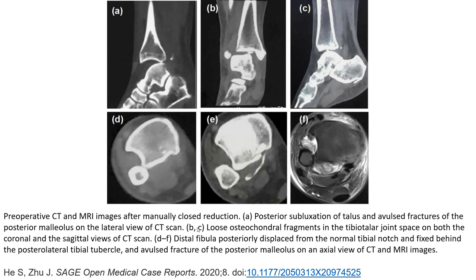The CT scan confirms the fibula fragment fixed behind the posterior tibia. An axial view of the CT/MRI image demonstrates a spiral fracture of the posterior malleolus. Thank you.